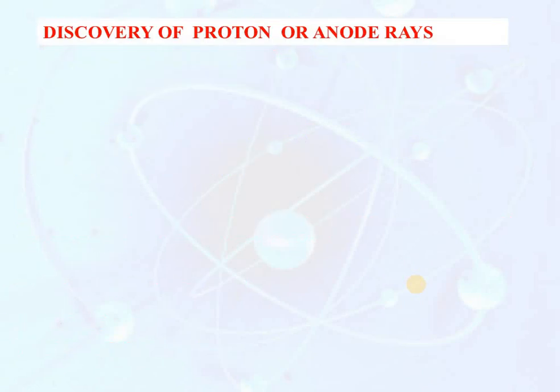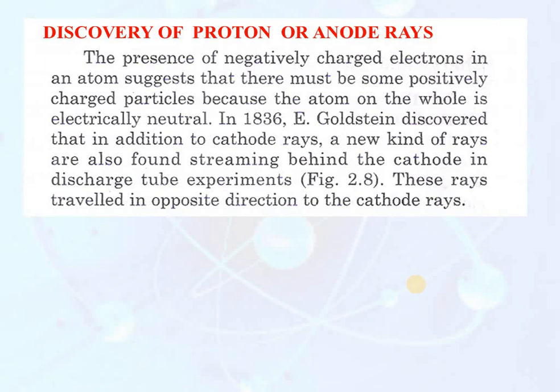Discovery of protons or anode rays: The presence of negatively charged electrons in an atom suggests that there must be some positively charged particle because the atom as a whole is electrically neutral. In 1886, E. Goldstein discovered that in addition to cathode rays, a new kind of rays are also found streaming behind the cathode in the discharge tube experiment. These rays travel in the opposite direction of cathode rays. E. Goldstein performed the same experiment done by J.J. Thomson.